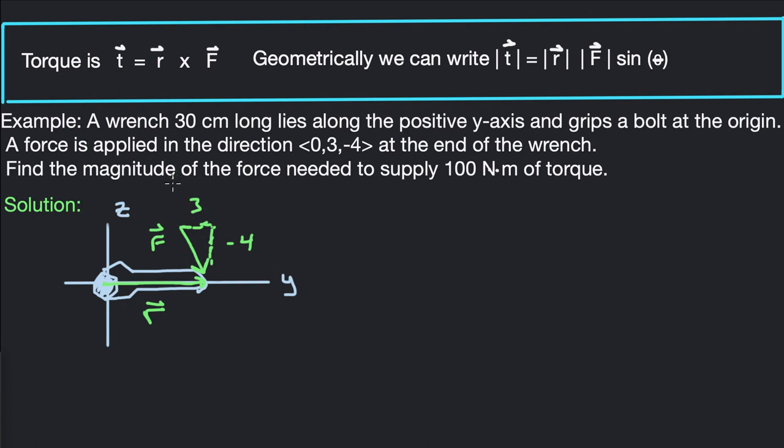So if we look at our example here, we draw the wrench along the positive y-axis. So this is a 3D direction, but we really only have it in the positive y-axis, and our force only has y and z components. So we'll just draw this in a 2D sense in the y-z plane.